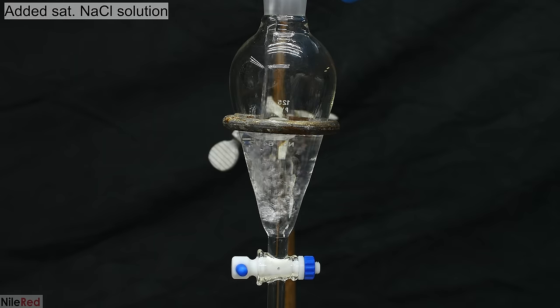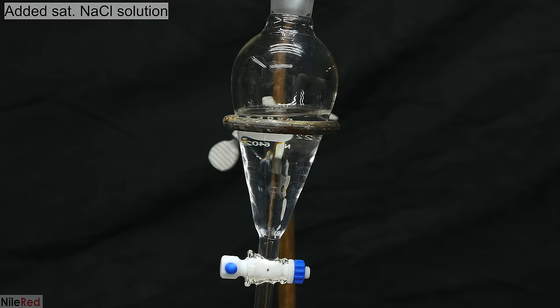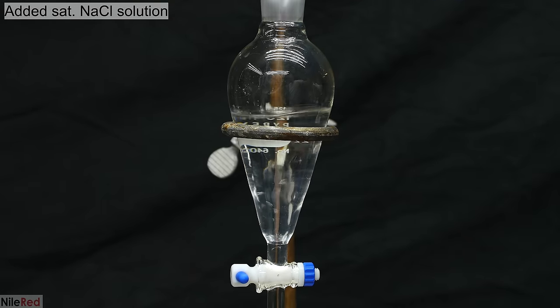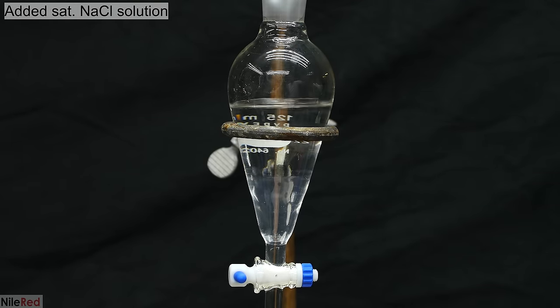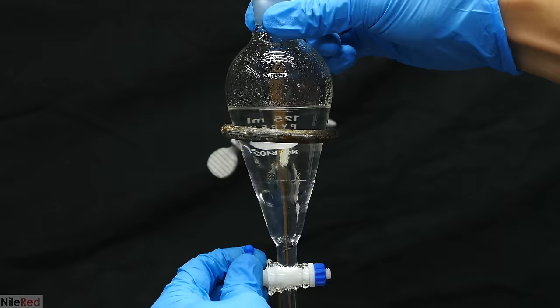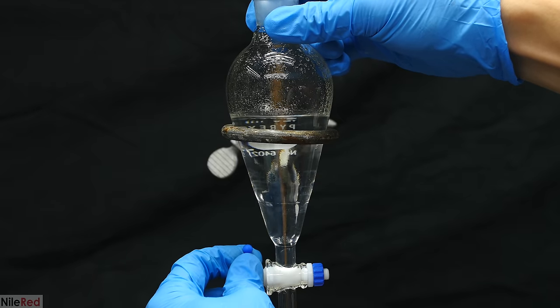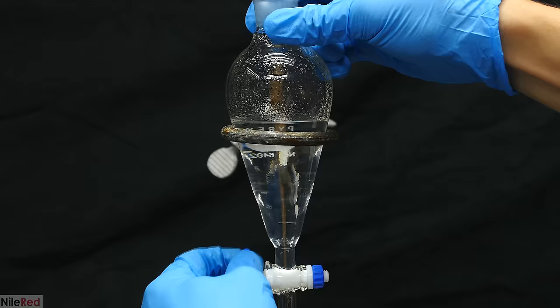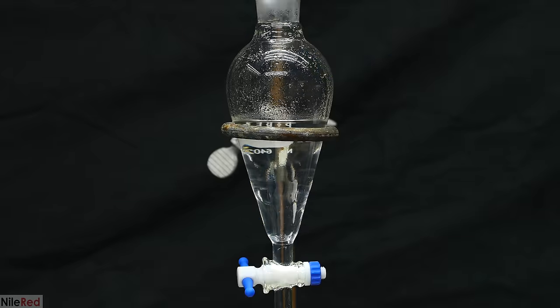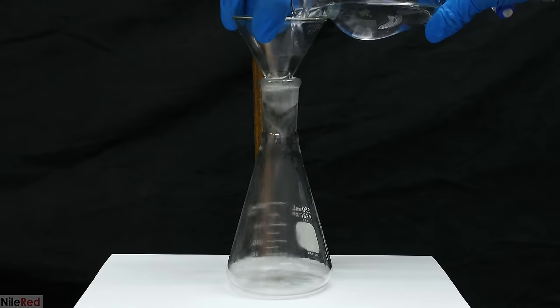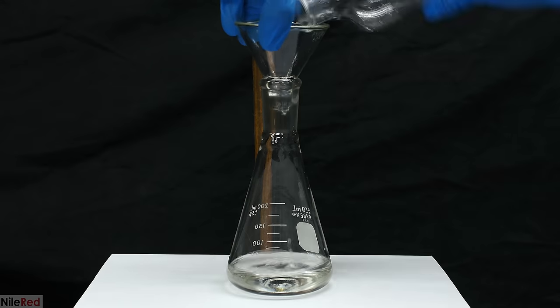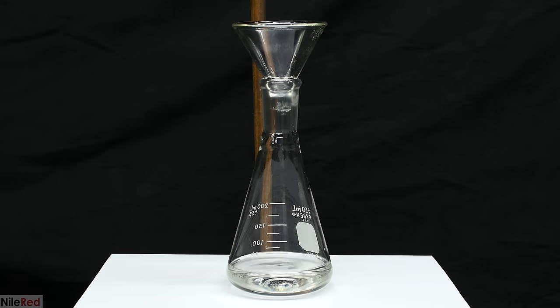The combined ether washings are poured back into a clean separatory funnel, and then I pour in some saturated salt solution. This step is somewhat optional, and it's mostly just used to dry the ether and pull out any water that might be dissolved in it. The aqueous layer was drained off, and our upper ether layer was poured into an Erlenmeyer flask.